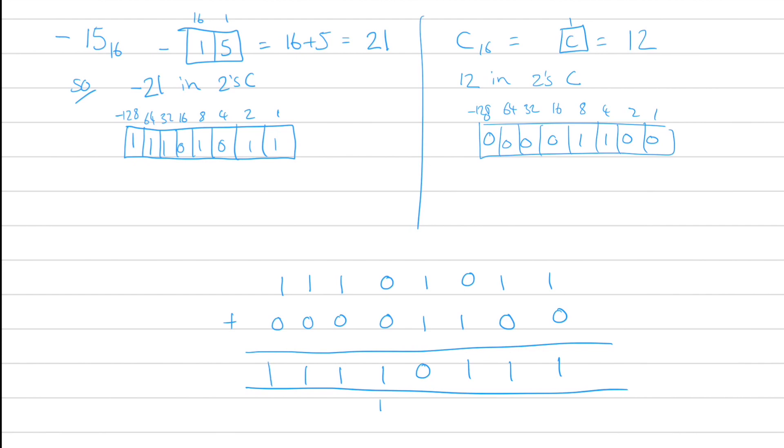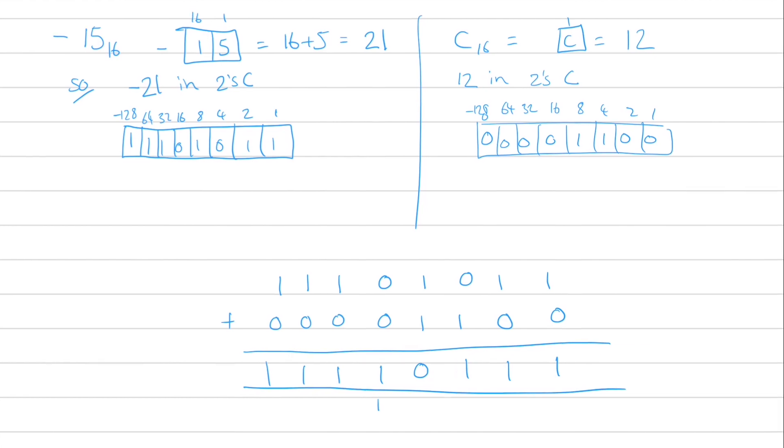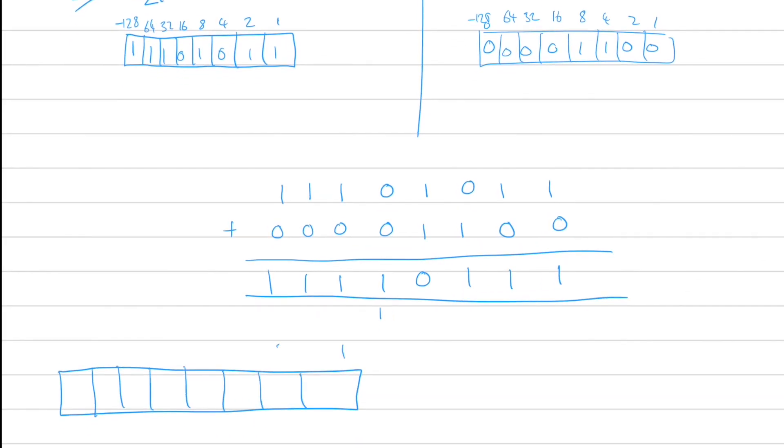So remembering that this representation is 2's complement, that leftmost value is the negative version of itself, so that becomes minus 128. So this is minus 128 plus 64 plus 32 plus 16 plus 4 plus 2 plus 1, which gives us the grand total of minus 9.